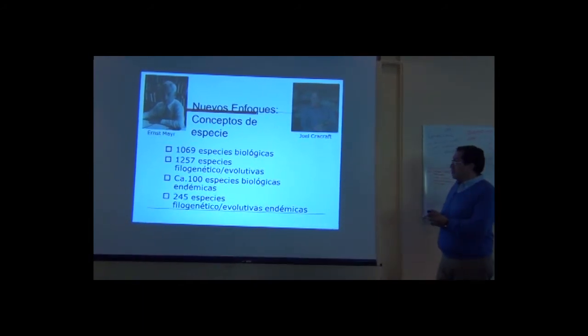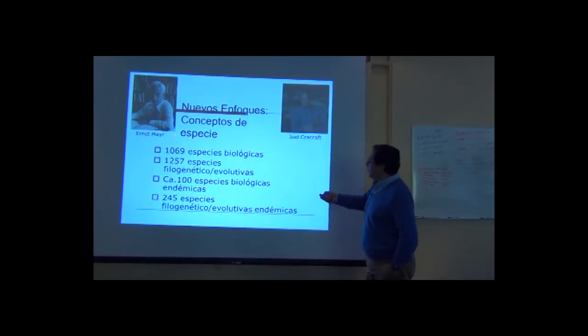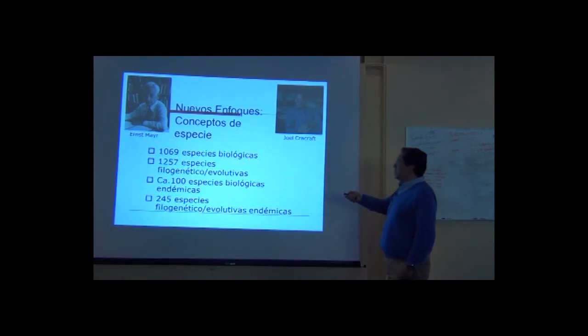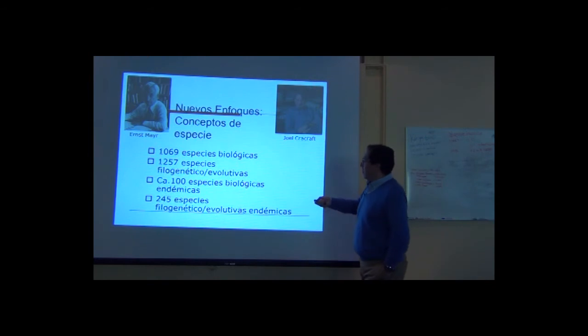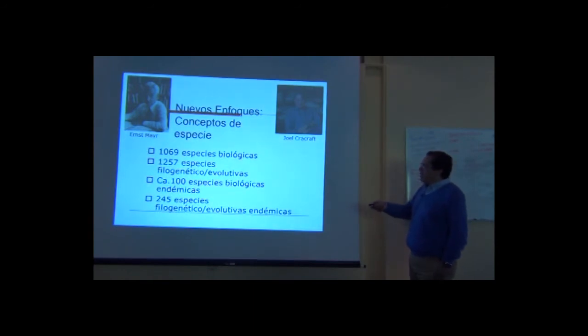Okay, so as Town is pointing out, this is relevant. Let's look at the raw numbers. For biological species concept, 1,069 species. Well, I had to tell that we use a phylogenetic evolutionary species concept to produce our taxonomy. We have 1,257 species. From almost 100 biological species endemic, we raised the number to 245 endemic species in Mexico.